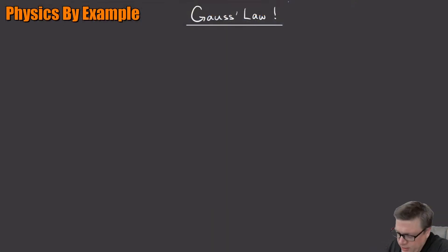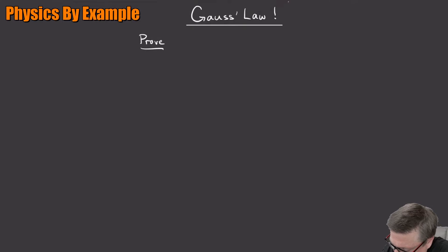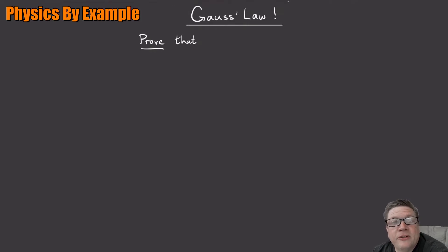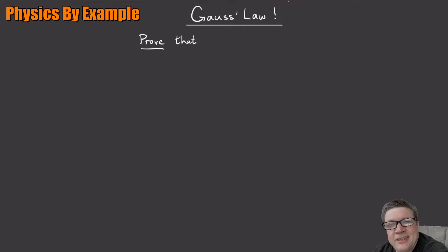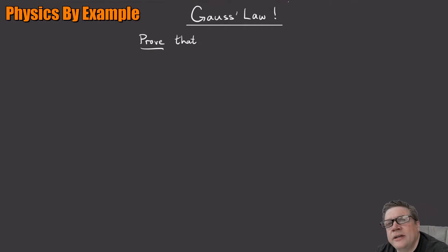Here's an interesting proof of something that, if you think about it, is just a little bit tricky. What we're going to do is prove that the differential form of Gauss's law is true for point charges. It's just sort of asserted that it's true, but let's prove it. And the reason that this is a little bit tricky is that we're going to use the divergence.